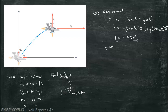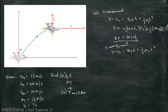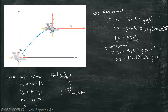For the y-component, we use the same formula, replacing x with y since motion is in the y-direction. Substituting the corresponding y values gives us a y-component displacement of 392 meters.